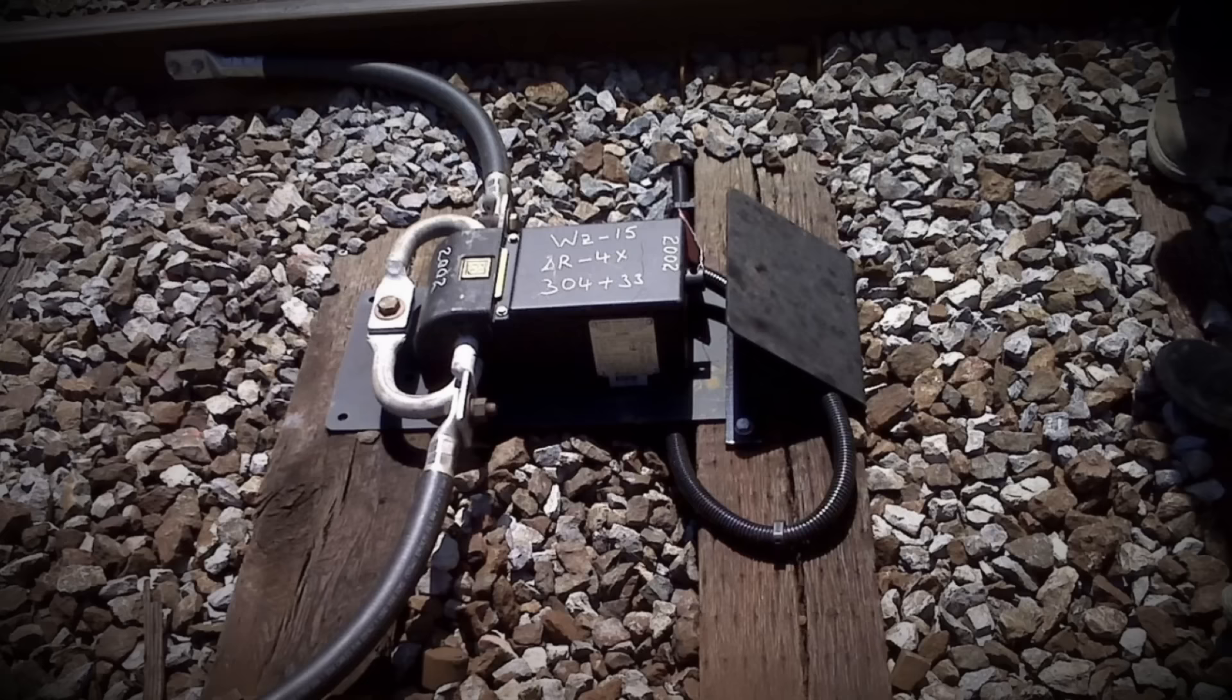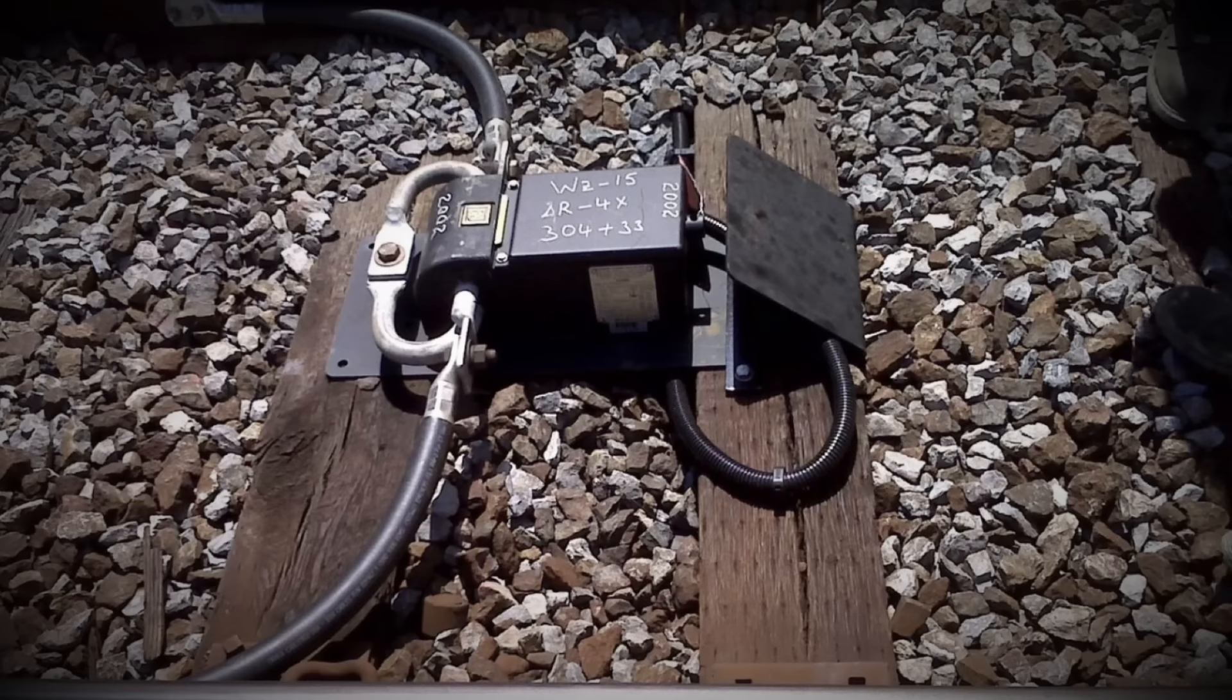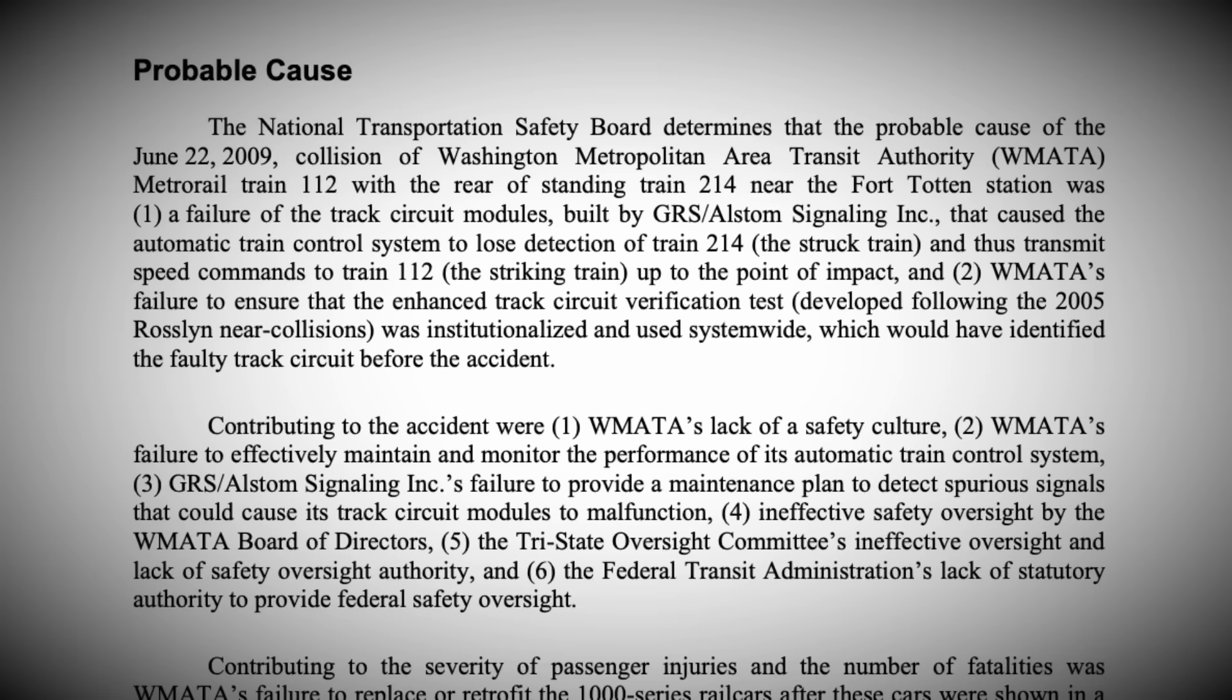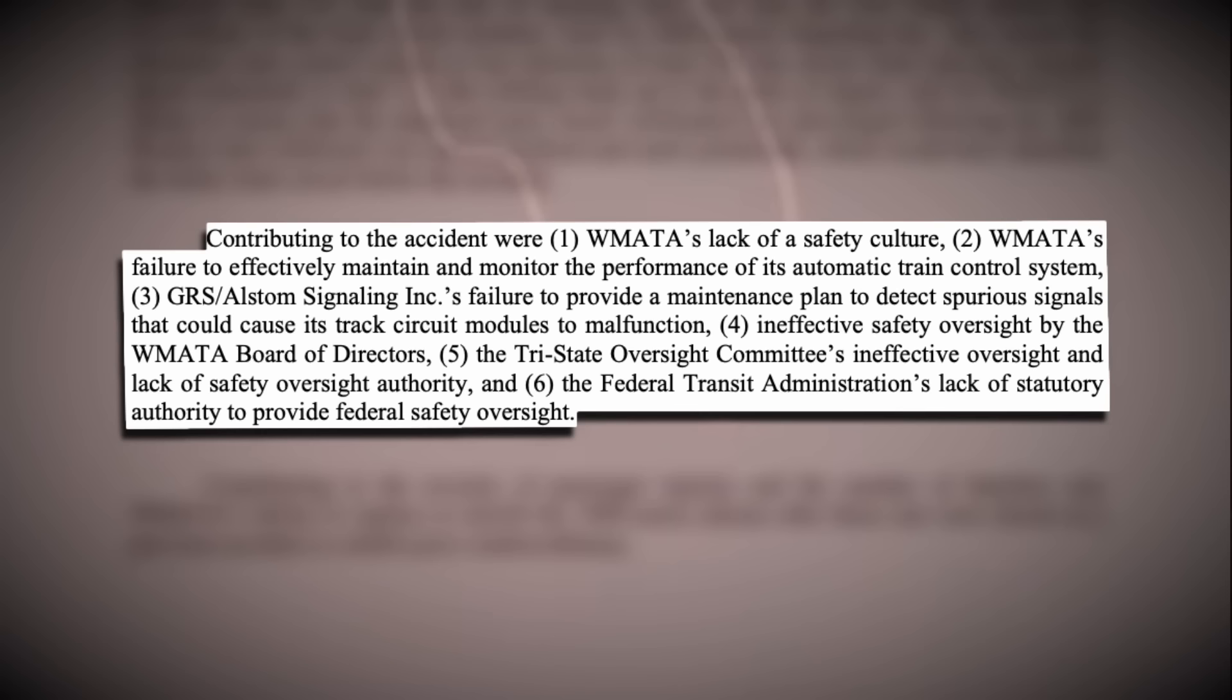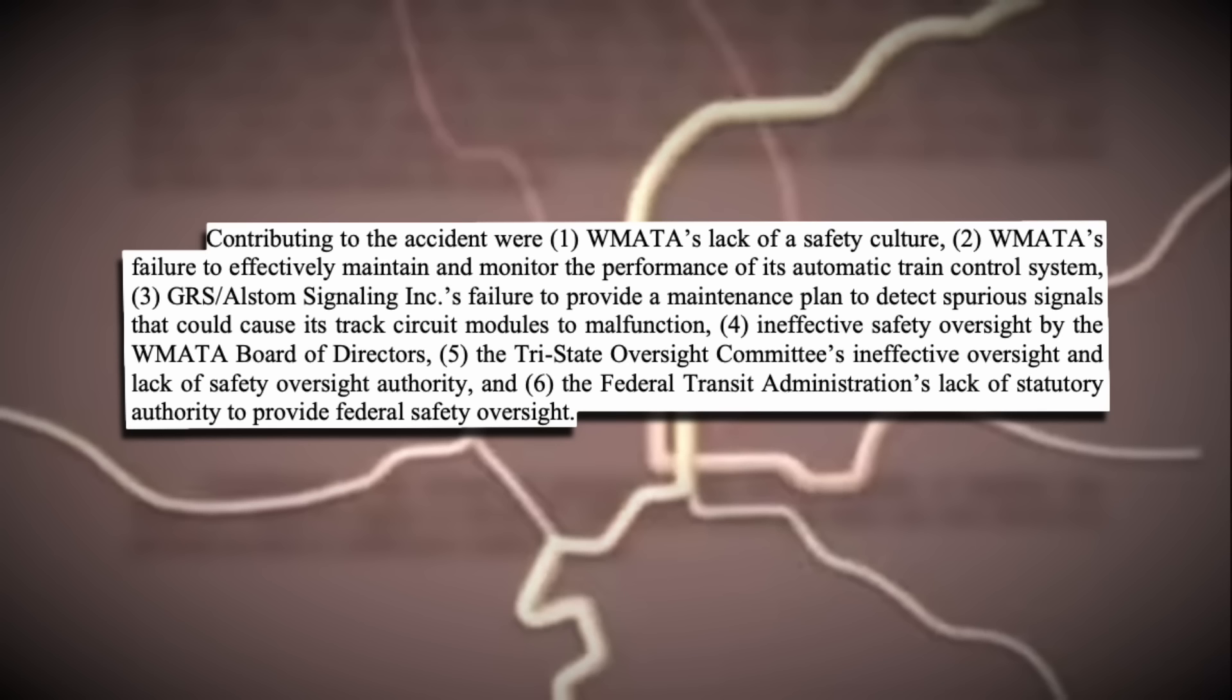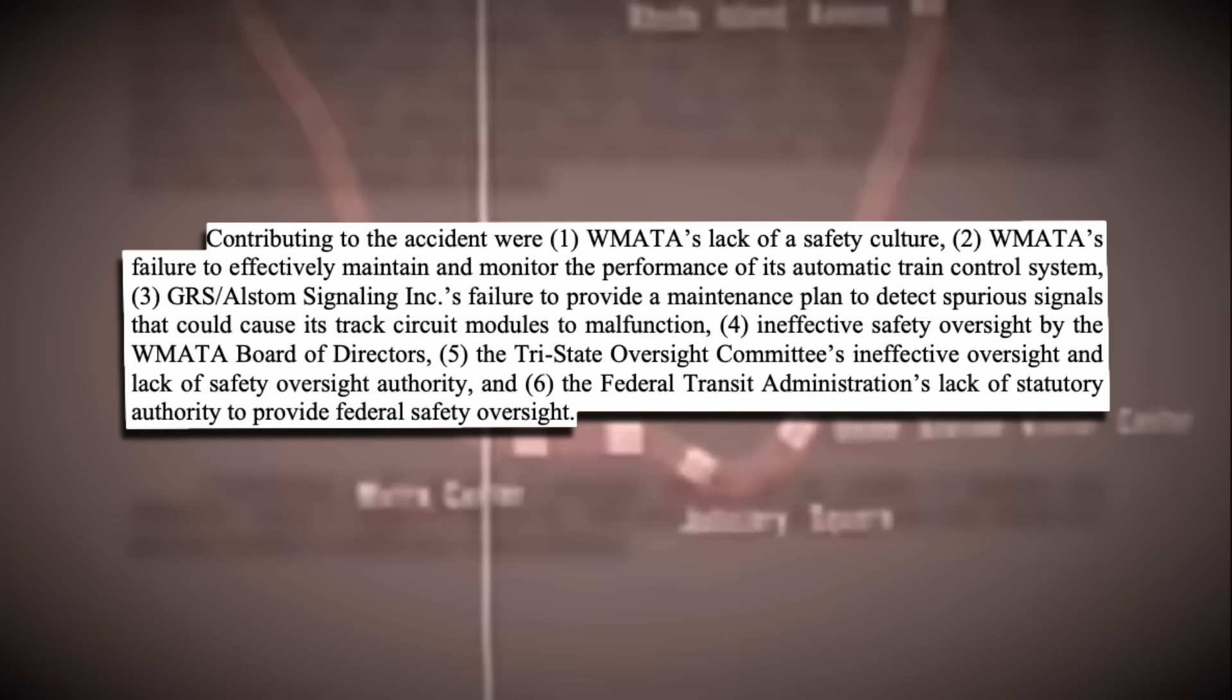What's bizarre is that in 1999, the Metro undertook a program of track circuit replacement with the aforementioned Alstom system. Interestingly, after 2005 incidents, Washington Metro and the module manufacturer Alstom didn't bring in enhanced tests to check the network's track circuits. The NTSB would say contributing to the accident were: WMATA's lack of safety culture, WMATA's failure to effectively maintain and monitor the performance of its automatic train control system, GRS Alstom signaling's failure to provide a maintenance plan, ineffective safety oversight by the WMATA Board of Directors, the Tri-State Oversight Committee's ineffective oversight, and the Federal Transit Administration's lack of statutory authority.